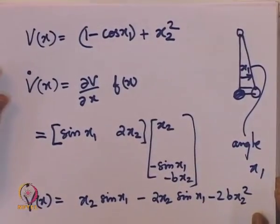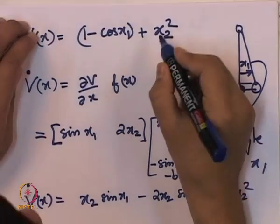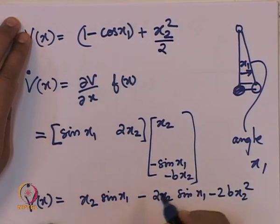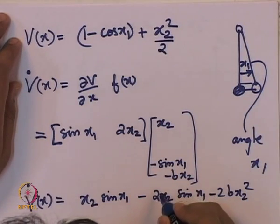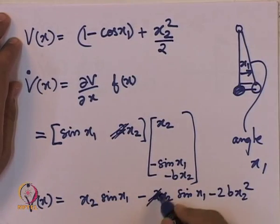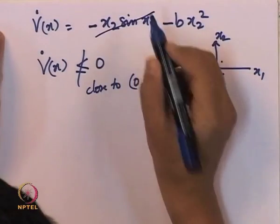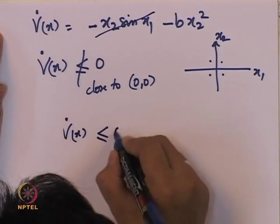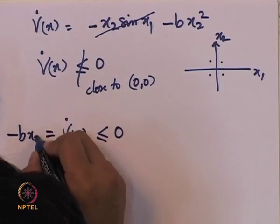Let us go back to the Lyapunov function and divide the kinetic energy term by 2, making V(x) = (1 - cos(x1)) + x2-squared/2. This is now indeed the actual kinetic energy. By doing this, the factor of 2 disappears and the cross term cancels out, giving V-dot(x) = minus b*x2-squared. This is less than or equal to 0, which proves that (0,0) is stable.